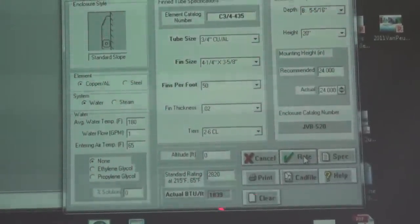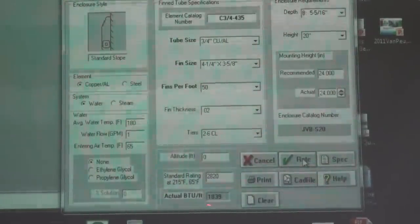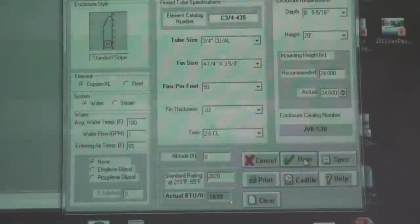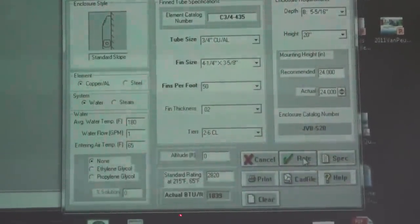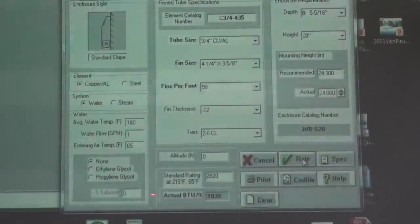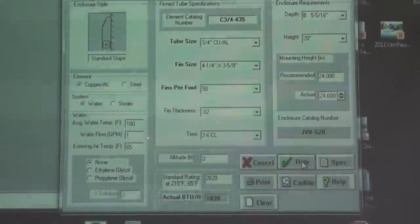Now this is an iterative process. You have to use the energy equation. If you have 10 feet, you have to take this 1839 times 10, and you have to divide it by, in this case since we have no glycol, 500 and your GPM of 2, to figure out what the delta T is.